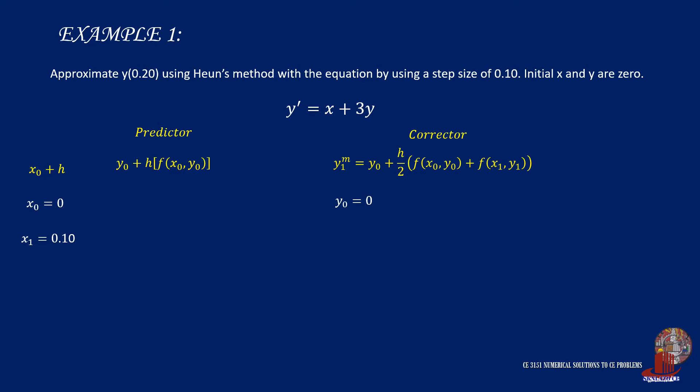The predictor y1 is computed using the Euler method. y1 will be y0 of 0 plus h of 0.1 times x plus 3y, which is 0 plus 3 times 0, and y1 is computed as 0.